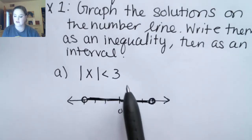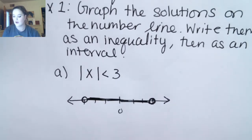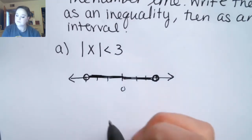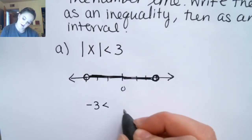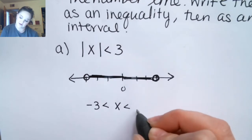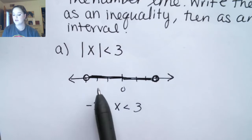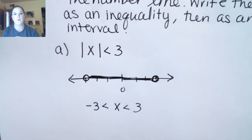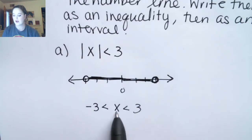Absolute value doesn't care about direction, so we could also go left up to three units and see that those numbers also fulfill this. For example, one: absolute value is one, that is less than three. Negative two: absolute value is positive two, that's less than three. Now we want to express that as an inequality. Our left endpoint is negative three, it's less than x, which is less than three. These numbers are between negative three and three, and because it's all one piece, you can use a compound inequality — it's called compound because it has these two inequalities. X is greater than negative three and x is less than positive three.